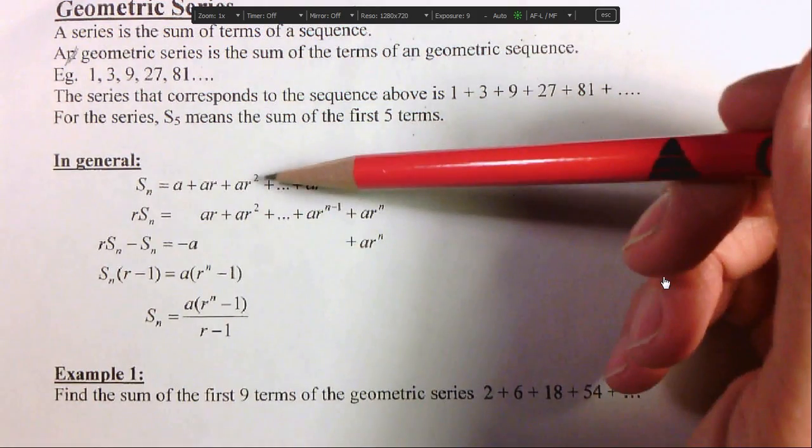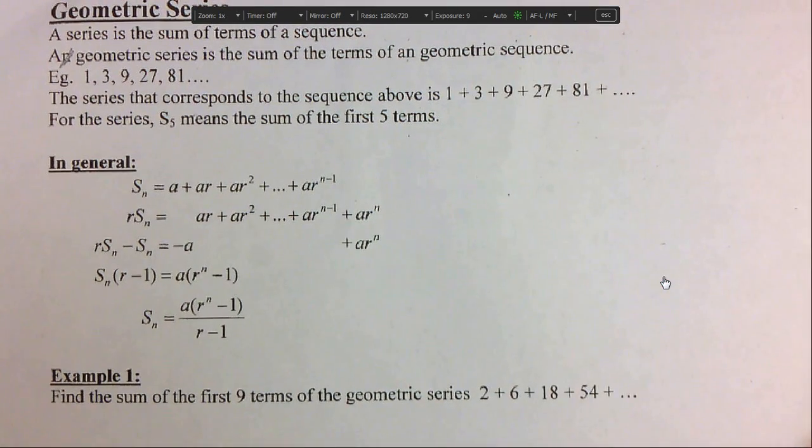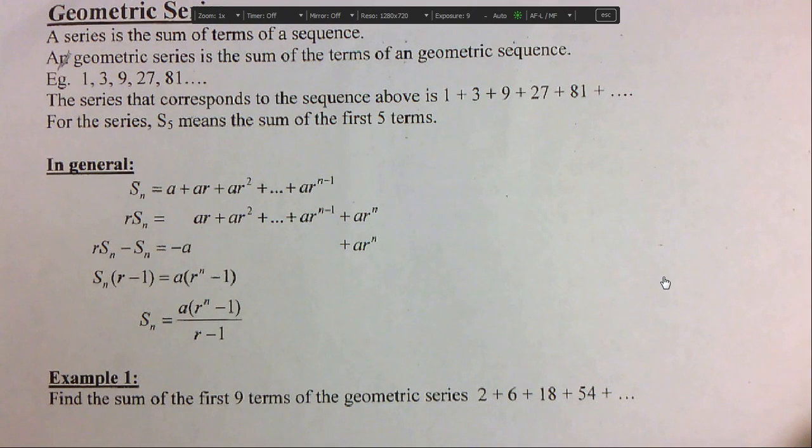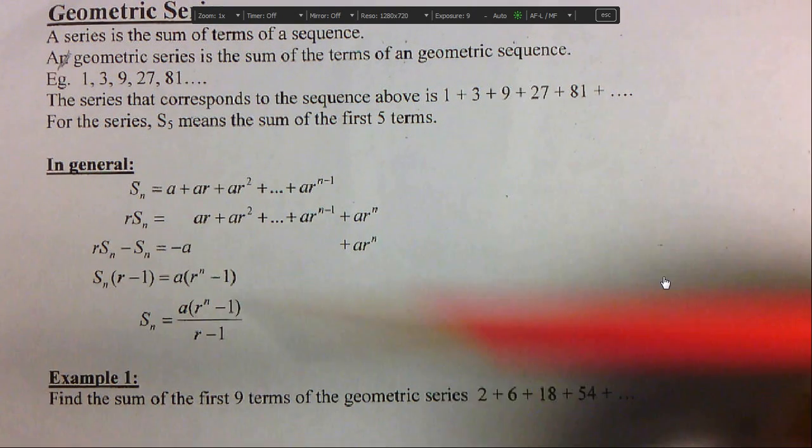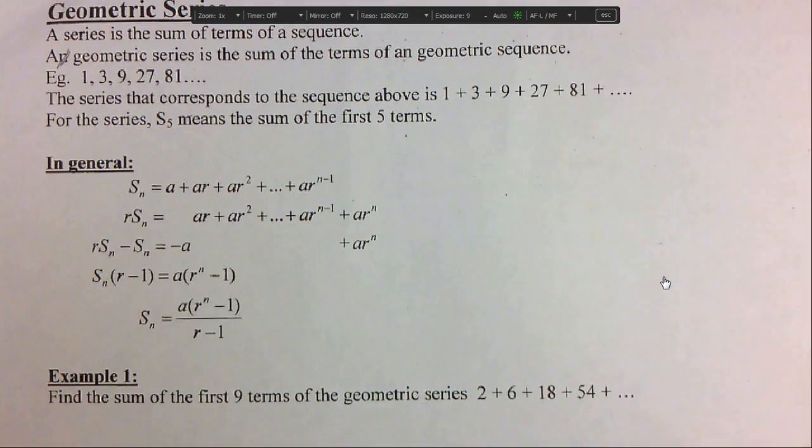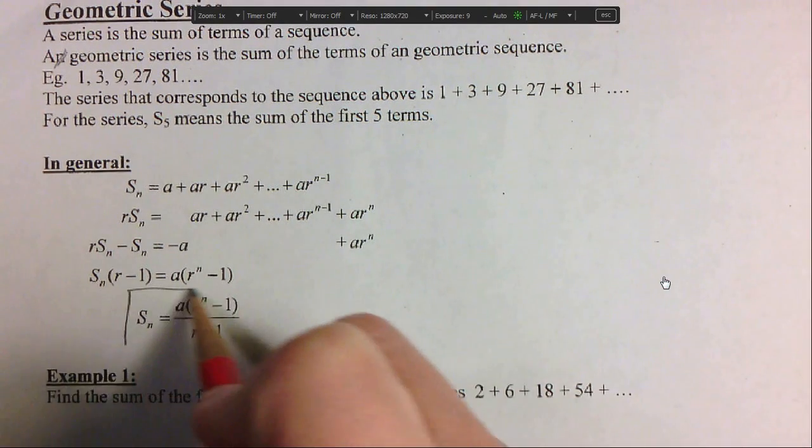Here they're deriving a formula for the sum of the series, but now it's geometric. They write out all the terms and then they do something neat. They divide the right side by r and bring the r over to the other side, and then they do a bunch of manipulation and end up with this.